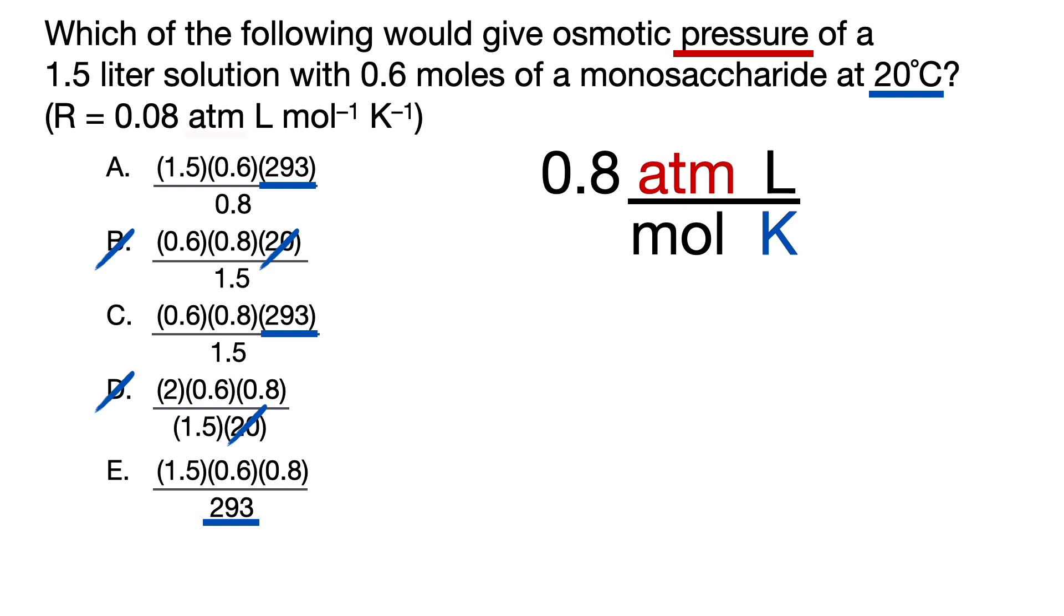Now back to pressure and its unit atm. In order for one of the answer choices to give us pressure, its unit must be on the top. And because the number always sticks to the numerator of its units, 0.8 must also be on the top, which narrows the answer choices down to C or E and eliminates A because 0.8 is on the bottom.